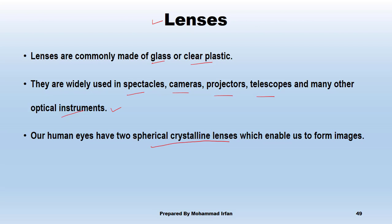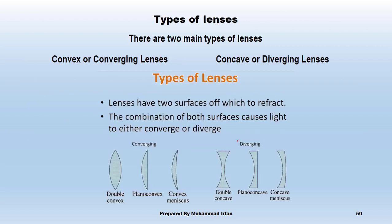Next, what are the two main types of lenses? These are convex lenses, which are also called converging lenses, because they focus rays of light to a single point. Then there are concave lenses, which are also called diverging lenses, because these lenses spread rays of light.